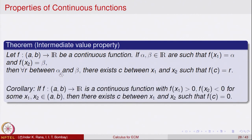A very special case of this theorem is when alpha is a number less than 0 and beta is something bigger than 0. As a corollary, if f is a continuous function such that f(x₁) > 0 and f(x₂) < 0, then for some point in between x₁ and x₂ the function should take the value 0. If at some point the graph is above the x-axis and at another point it is below, then the continuous function must cross the x-axis at some point in between.